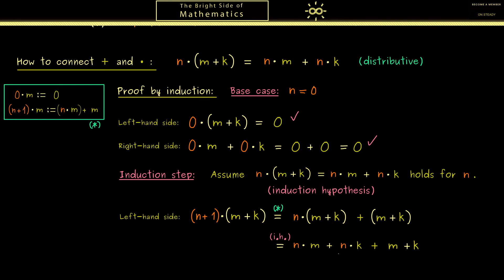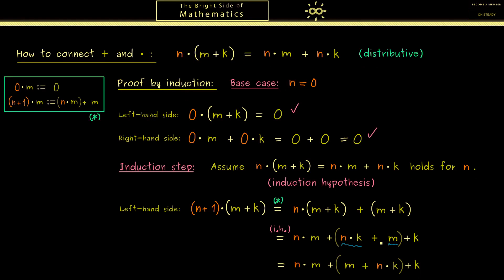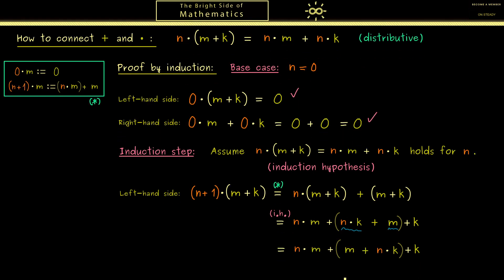After that I want to use the commutative law for the addition and exchange the order of these two numbers. Hence we get this. The reason for this was to have all the m's on the left and all the k's on the right, because now I can rearrange the parentheses. So here and there.